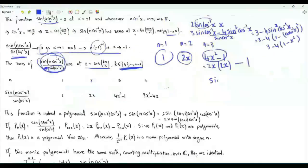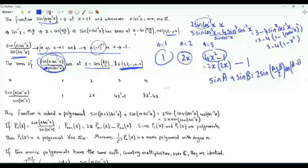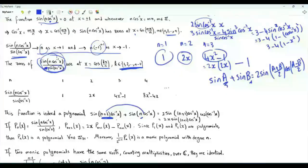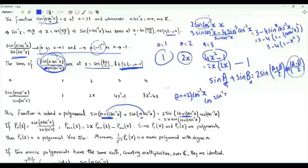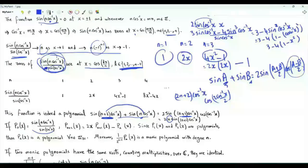Note also that 4x squared minus 1 equals 2x times 2x, the previous polynomial, minus 1. In fact, this is a general rule. We know that sine of a plus sine of b equals 2 sine of (a+b)/2 times cosine of (a-b)/2. Taking a to be (n+2) cosine inverse x and b to be n cosine inverse x, this sum is 2 times sine of (n+1) cosine inverse x times cosine of cosine inverse x, which is x. Dividing both sides by sine of cosine inverse x, if this function is P_n(x), then P_{n+2}(x) equals 2x P_{n+1}(x) minus P_n(x).